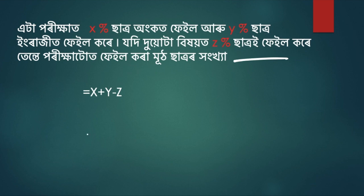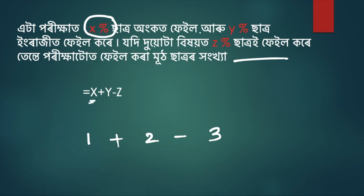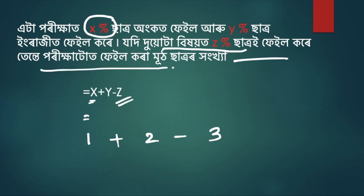This is the 1, 2, 3. If x% fail, then y% fail, the x% fail. This is the 1.